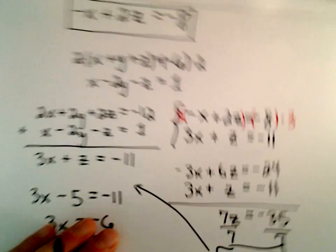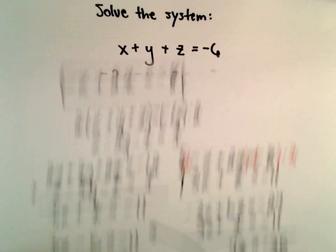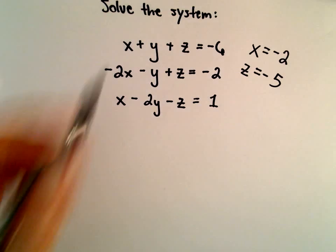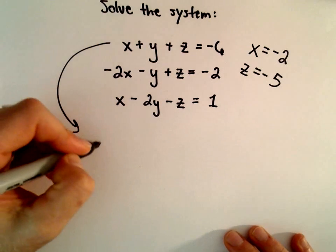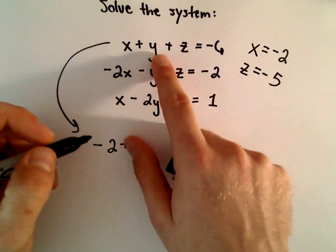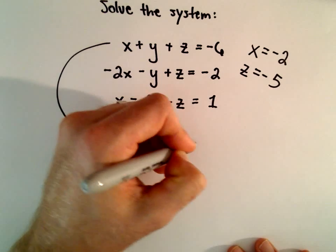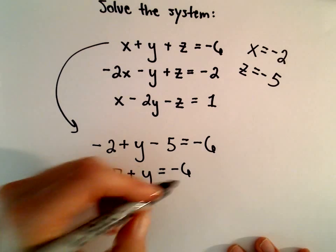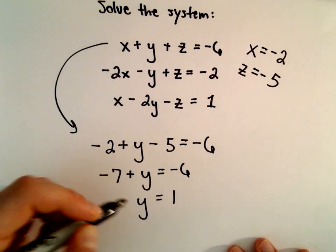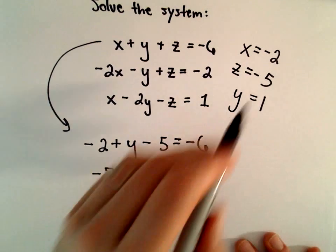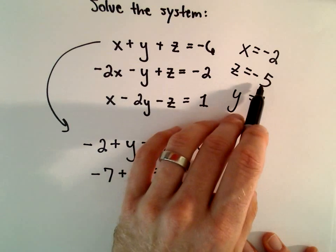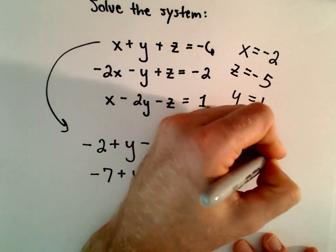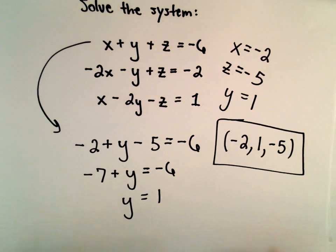Now we can go back to one of our starting equations to solve for y. We've got x equals negative 2 and z equals negative 5. Taking the first equation: negative 2 plus y plus negative 5 equals negative 6, so negative 2 minus 5 is negative 7, giving us y plus negative 7 equals negative 6. Adding 7 to both sides, y equals positive 1. So our solution is x equals negative 2, y equals 1, z equals negative 5, written as the ordered triple negative 2, comma 1, comma negative 5. We have one unique solution.